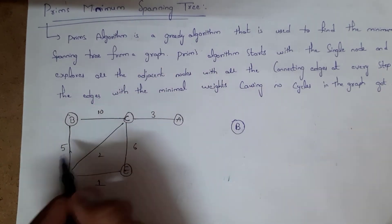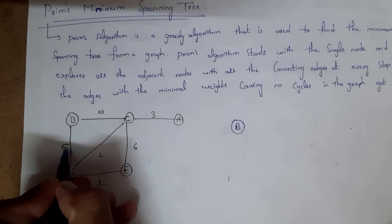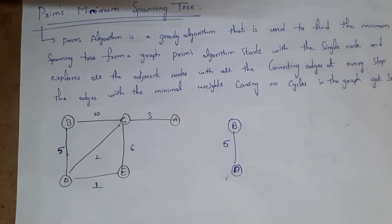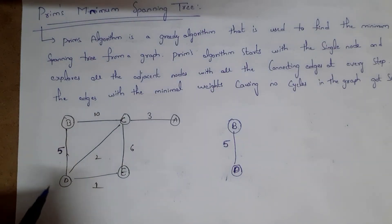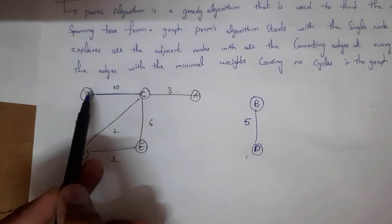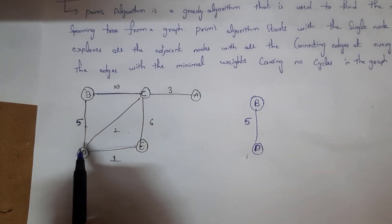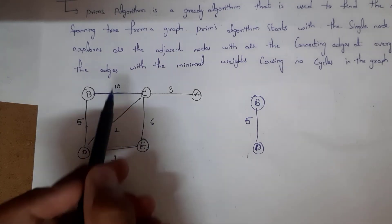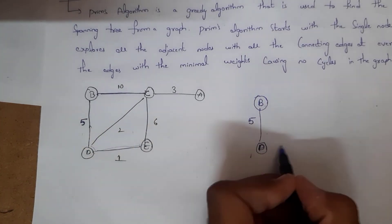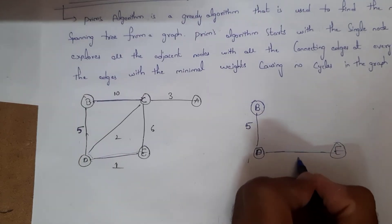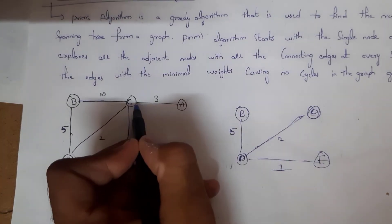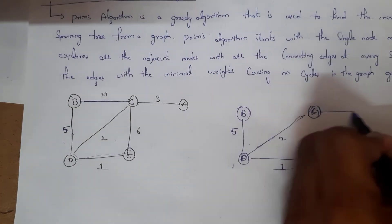Among the adjacent nodes D and C, weight 5 is the smallest, so I connect B to D with weight 5. Now the adjacent nodes for the set {B, D} are: B is connected to C, and D is connected to C and E. Among these, weight 1 is the smallest, so I select D to E with weight 1.